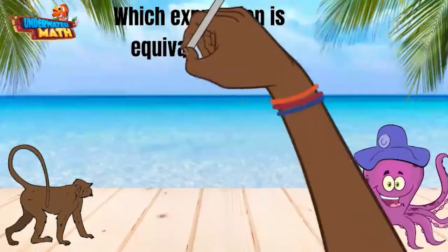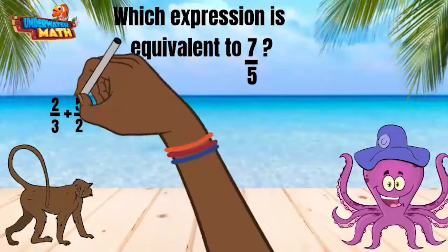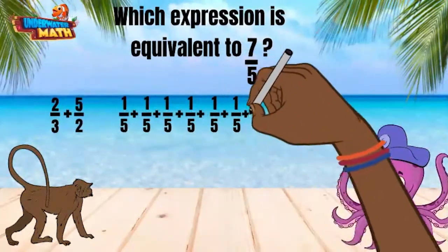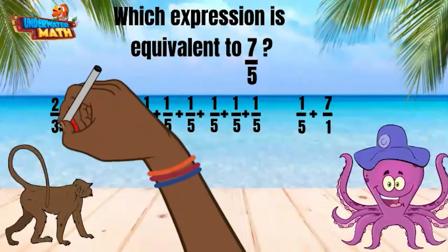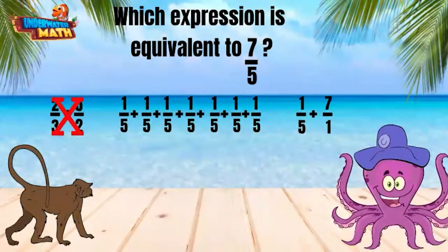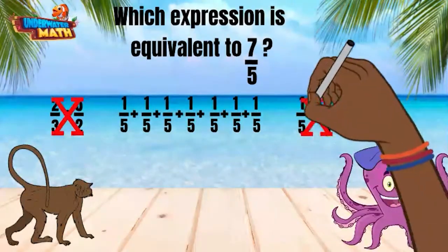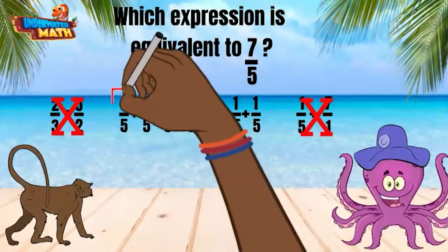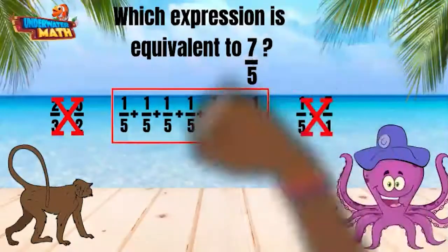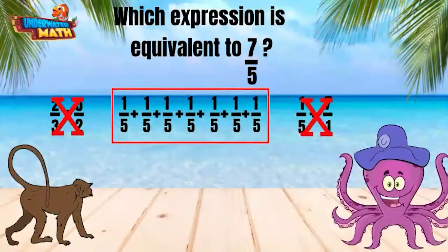Monty is trying to figure out which expression is equivalent to 7 fifths. Can you help him? We cannot add 2 thirds and 5 halves because they do not have a common denominator, so that option and the last option will not work. The middle option shows 7 fifths broken into unit fractions — adding 1 fifth together 7 times makes 7 fifths. Great job!